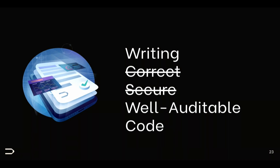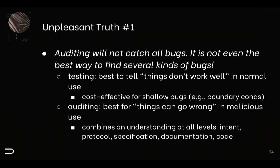A phantom function is generally a function that, even though it doesn't exist, the contract accepts a call to it without reverting. Now, let's go to the main body of the talk: advice on writing well-auditable code. I could also say correct code or secure code. We've audited a lot of top-name DeFi protocols, so this comes from experience. First, some unpleasant news: the number one unpleasant truth is that auditing will not catch all bugs in your code. In fact, auditing is not even the best way to find some kinds of bugs.